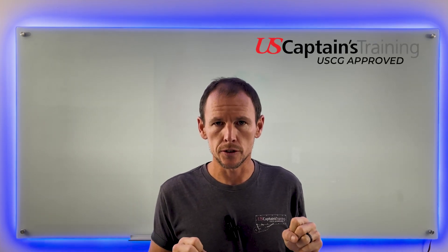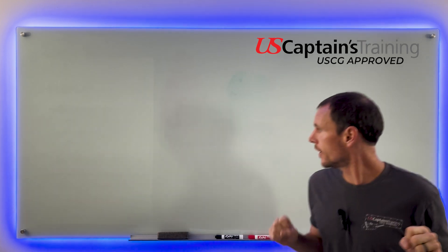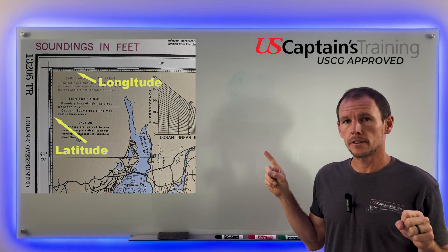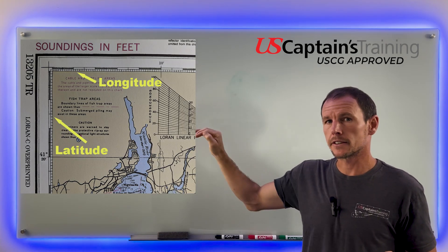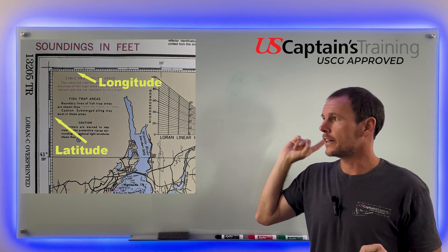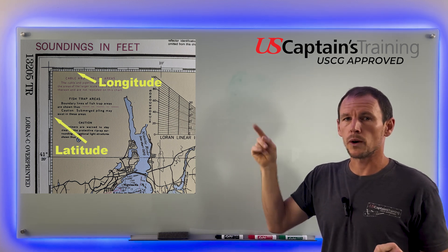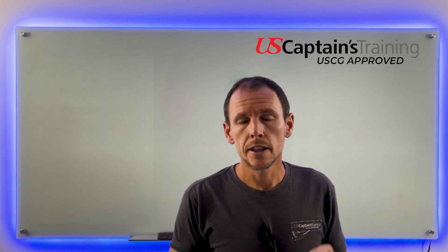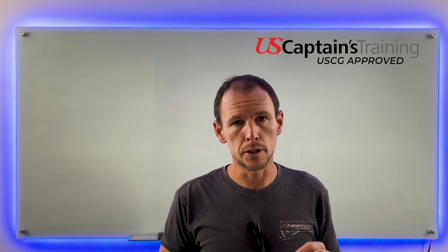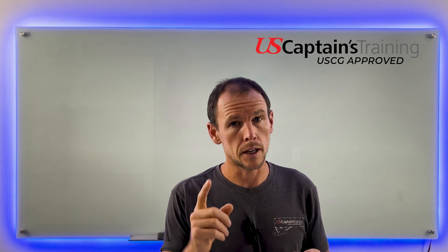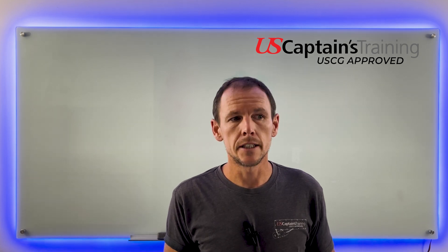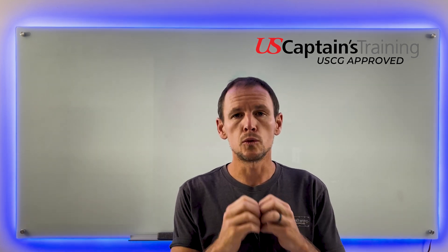Latitude and longitude — latitude is like a ladder up the side of the chart, and longitude is east and west on the top and bottom of the chart. We only use latitude to measure distances for these problems. It's because one minute of latitude is equal to one nautical mile, conveniently.